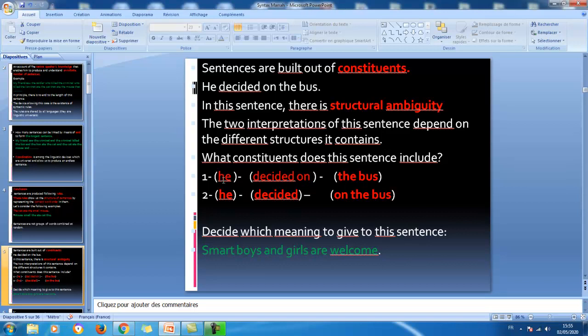The two interpretations of this sentence depend on the different structures it contains. For example, here, one: 'he,' this is the first constituent; 'decided on,' the two words represent one unit, one constituent here. Now, the third constituent in this sentence is 'the bus.' The and bus, the two words go together to form one constituent. So, how many constituents here? We have one, two, three. Now, it seems there is a difference in terms of structure between number one and two, although it's the same sentence. Look, 'he,' it's the same constituent, subject. But, look here, we have got 'decided,' alone. And, here we have got 'on the bus.' The three words here form one unit, one constituent.